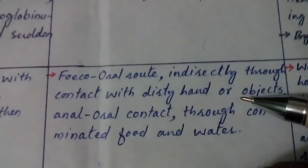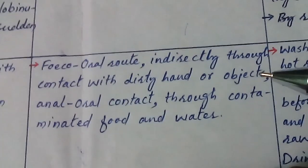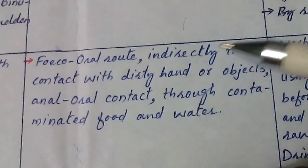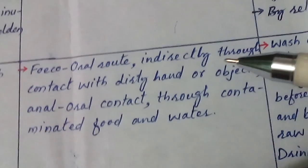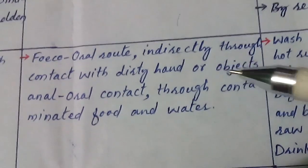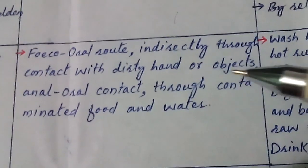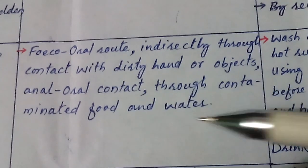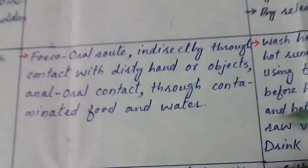The mode of transmission for amoebiasis can be understood through the fecal-oral route. It is transferred indirectly through contact with dirty hands and objects, oral contact, and through contaminated food and water.